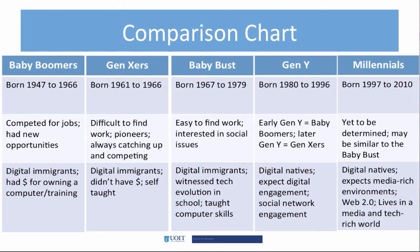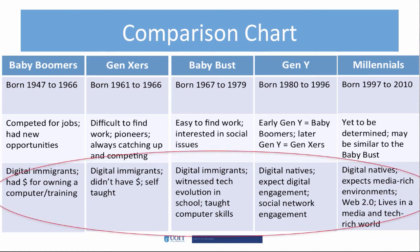In this chart, we can easily see the job opportunities typical of each cohort. I'd like to draw your attention to the bottom row. All cohorts have different degrees of digital interest and proficiencies, and they may have different preferences for learning in the workplace. For example, baby boomers may already have a background in what is taught, Gen Xers may want to learn it themselves, and Gen Y and millennials probably prefer media-rich learning with a high level of social engagement.